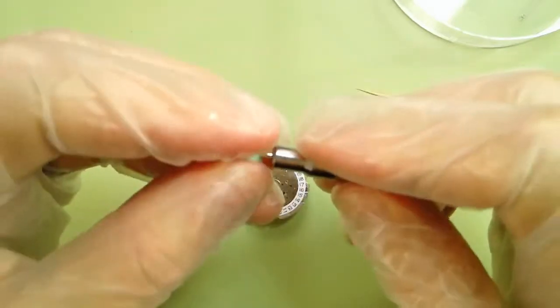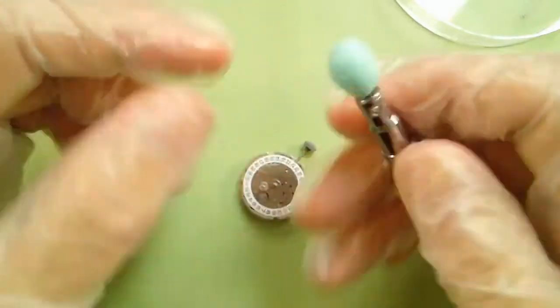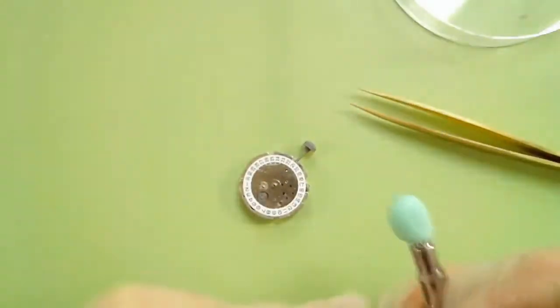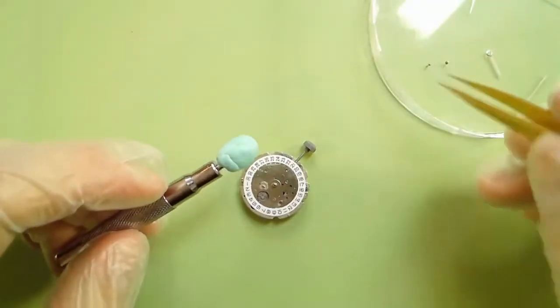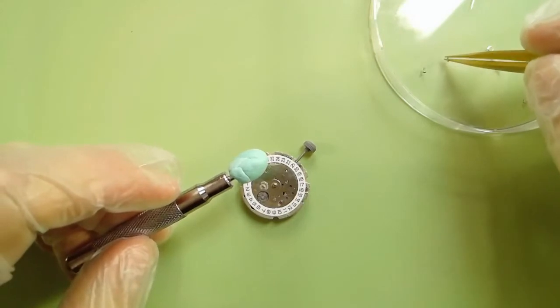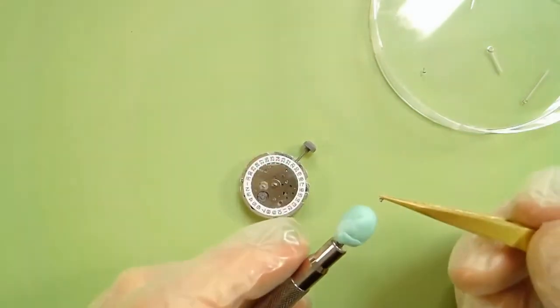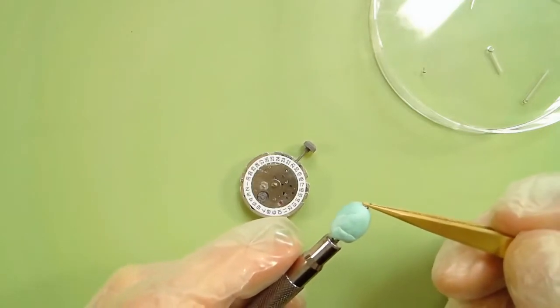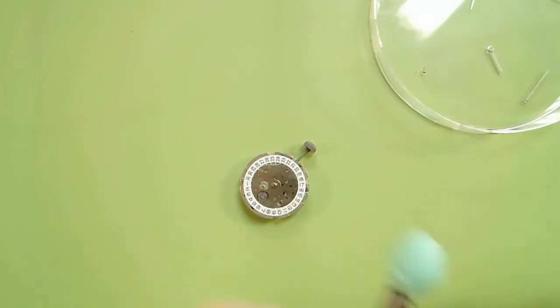So you're going to put the rodico in a ball like so. It's going to look kind of like this. You're going to grab one of your dial feet screws by the threading, and you're going to stick it on the tip of this rodico putty just like this.